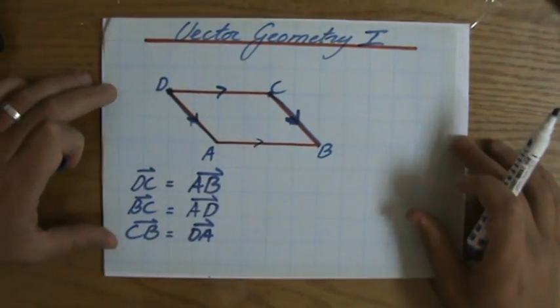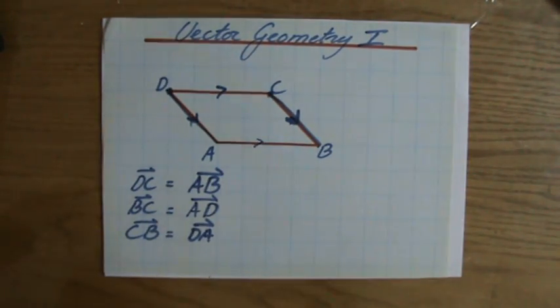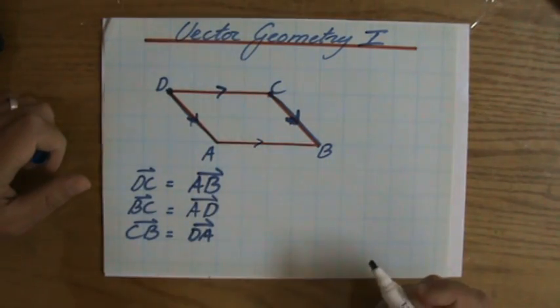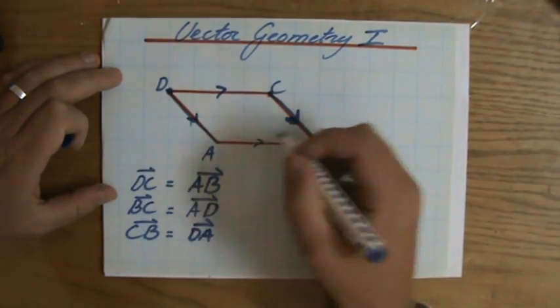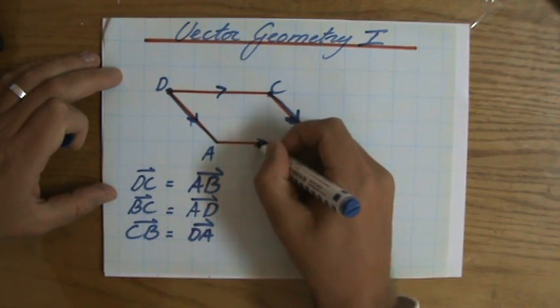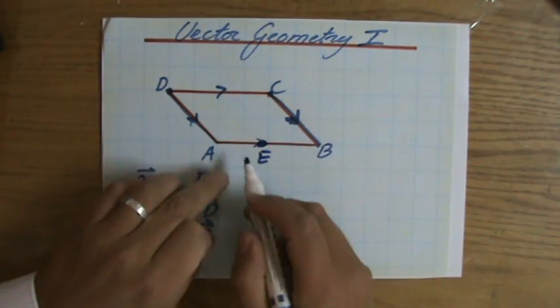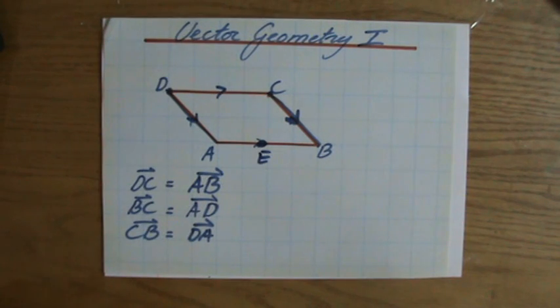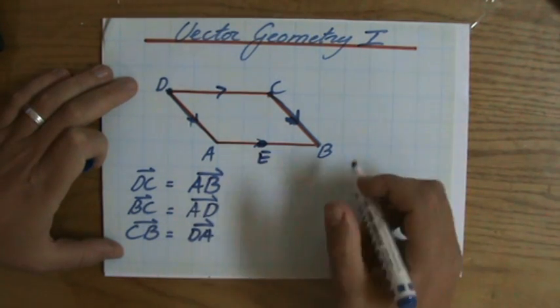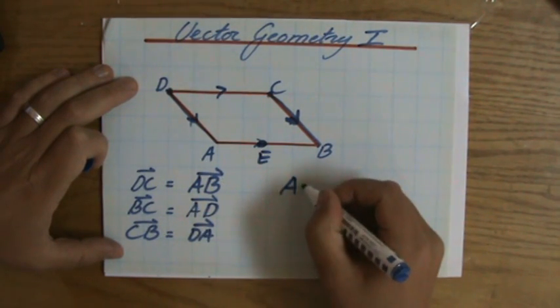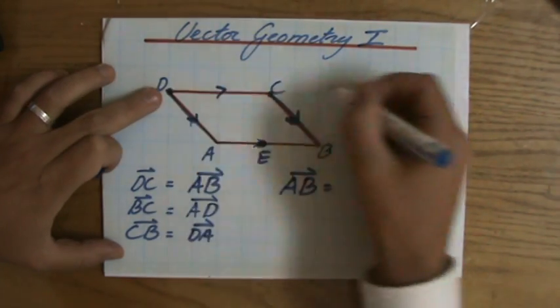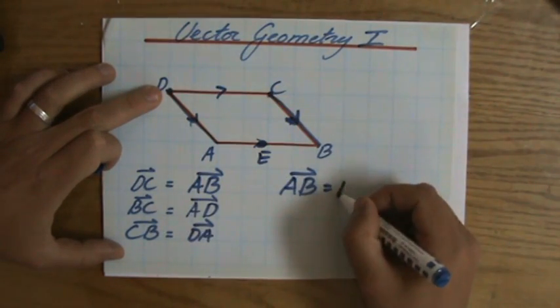Last one: let's say exactly in the middle here I put another point, and we'll call it E. E is exactly in the middle between A and B. I can say, for instance, that AB is indeed the same as DC, as we already said. But it's also the same as 2 times AE, and it's also the same as